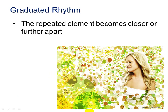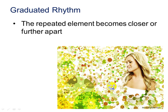Graduated rhythm is when the repeated element becomes closer together or farther apart. What is the repeated element in this picture? You're right, it's these little circles. Here we have space between the circles, but here we don't. There is some rhythm, and we have a huge space between the circles here to allow for the girl to stand there. That's what brings emphasis into this design and pulls your eye to her — it's the graduated rhythm.